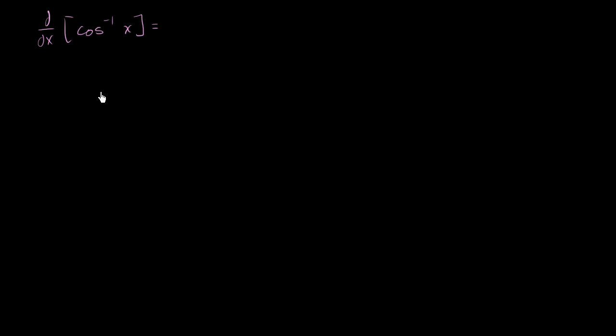So assuming you've had a go at it, let's work through it. Just like last time, let's set y equal to this. y is equal to the inverse cosine of x, which means the same thing as saying that x is equal to the cosine of y.